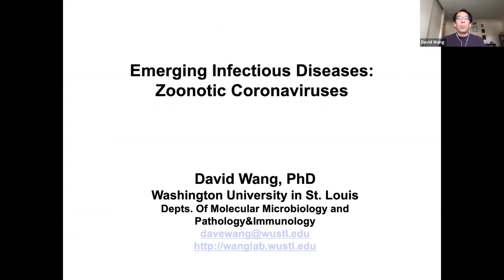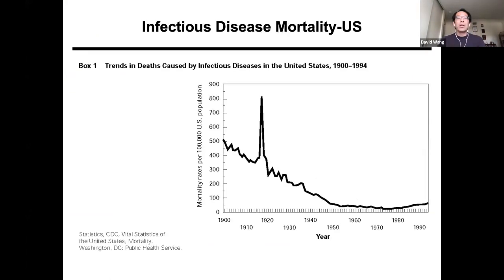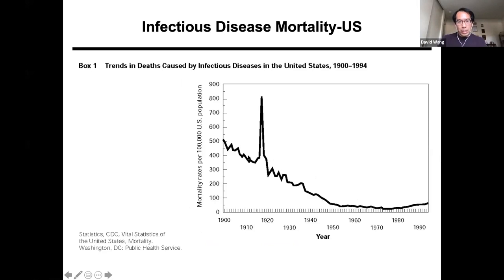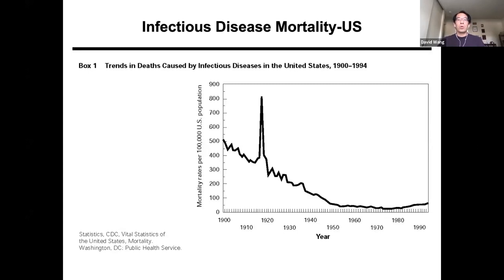To begin, before we can understand emerging infectious diseases, we need to understand infectious diseases more broadly. Here is a graph of infectious disease-related mortality in the United States over the past century. At the beginning of the 20th century there was high mortality that steadily declined, in large part over the first half of the century, attributable to multiple factors including increased appreciation for hygiene and sanitation, improved water quality, the advent of antibiotics, and eventually vaccines. This produced a dramatic reduction in infectious disease mortality, giving promise that infectious diseases could be, quote, cured.